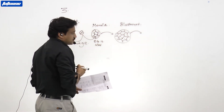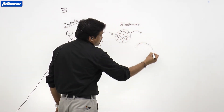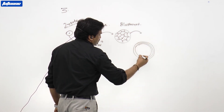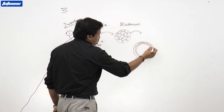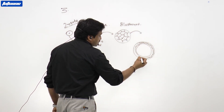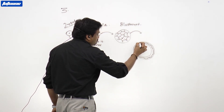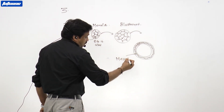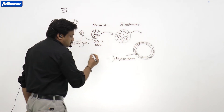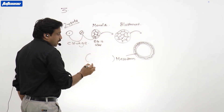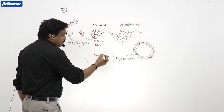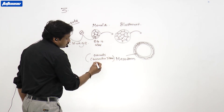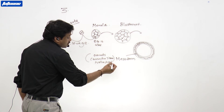After blastocyst formation, it is converted into a triple-layered structure with three germ layers. The outer layer is the ectoderm, from which important structures like skin, epidermis, and the nervous system are derived. The second layer is the mesoderm, from which connective tissue, notochord, and gonads are derived embryologically.